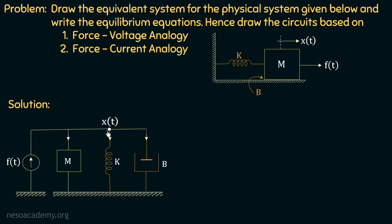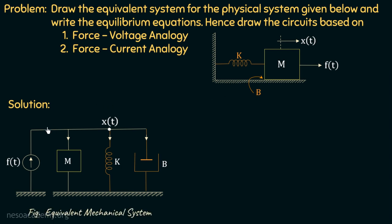To summarize: the force due to acceleration, the restoring force of the spring, and the opposing force due to friction are all opposing forces acting in the opposite direction to displacement. The direction of the applied force and displacement are the same. So in our equivalent mechanical system, we represent the applied force with a source whose direction is towards the displacement. This is the complete equivalent system and we are now in a position to write the equilibrium equations by applying the node equation at node x.